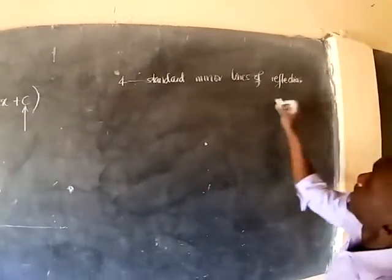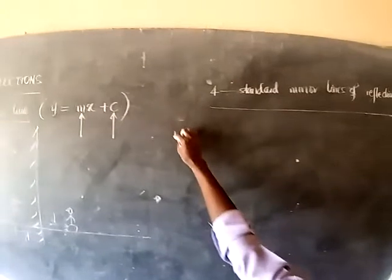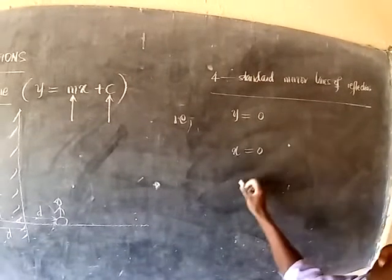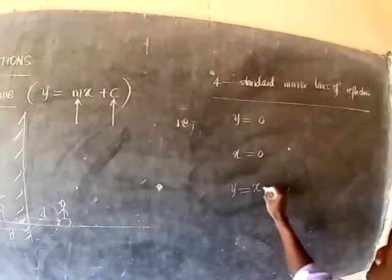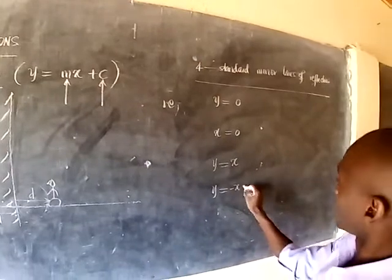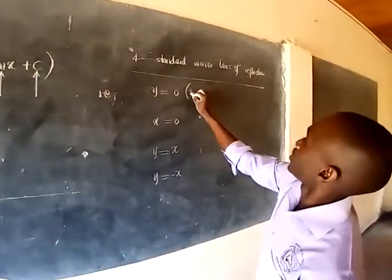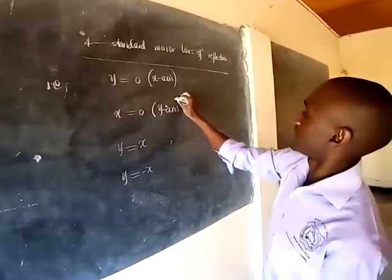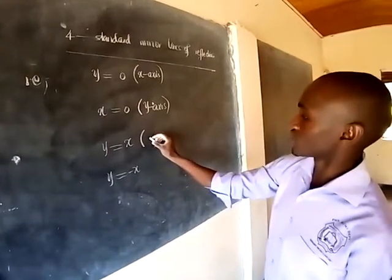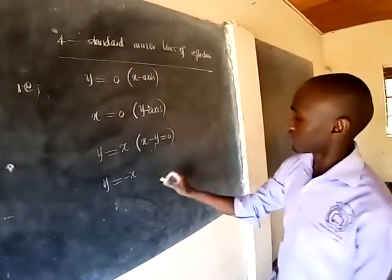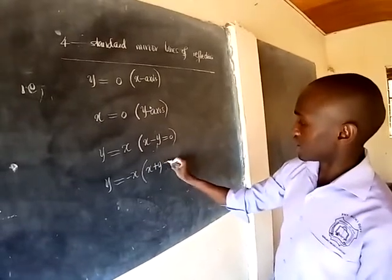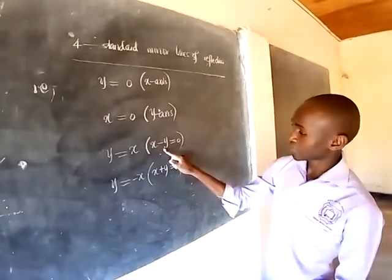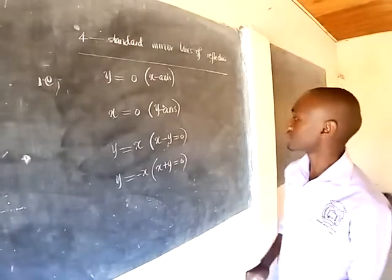We have four standard mirror lines of reflection: the line y equal to 0, the line x equal to 0, the line y equal to x, and the line y equal to negative x. The line y equal to 0 is the x-axis; the line x equal to 0 is the y-axis. This line can also be denoted as x minus y equal to 0, and this one can also be denoted as x plus y equal to 0.